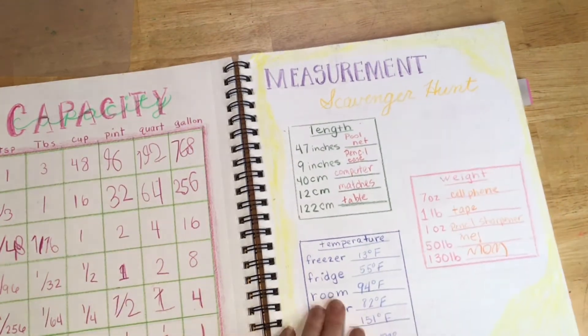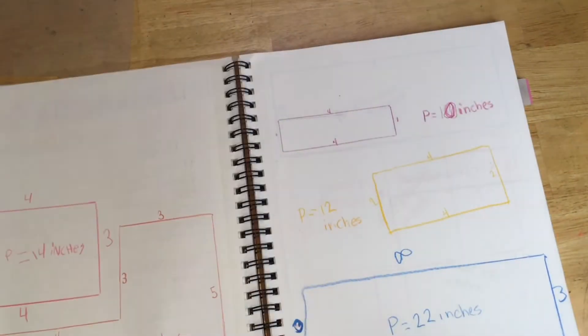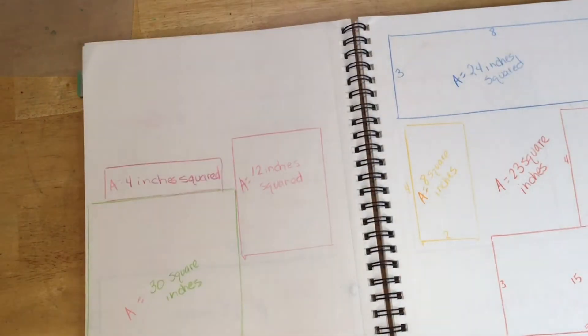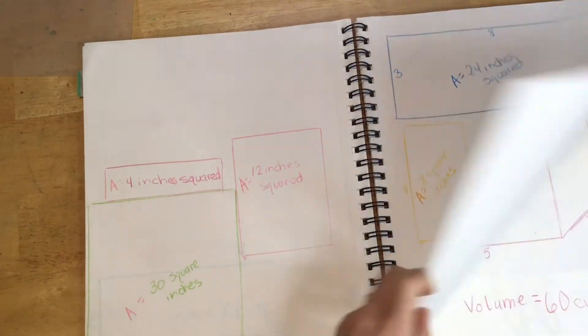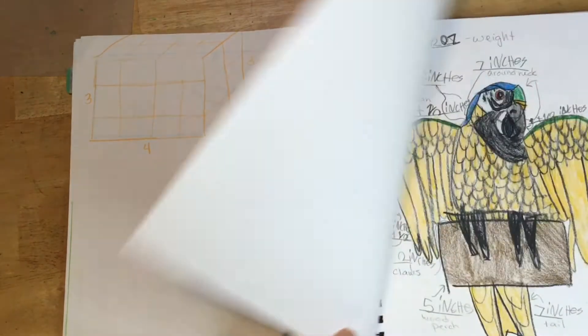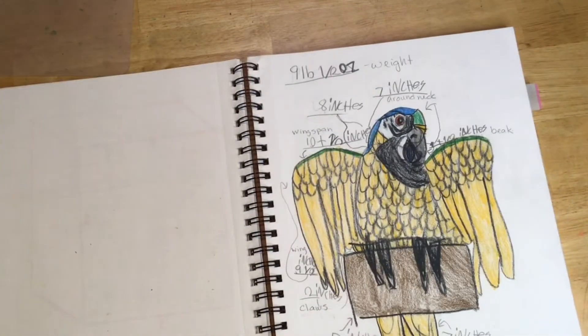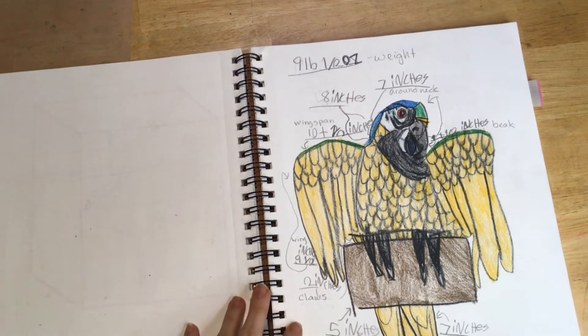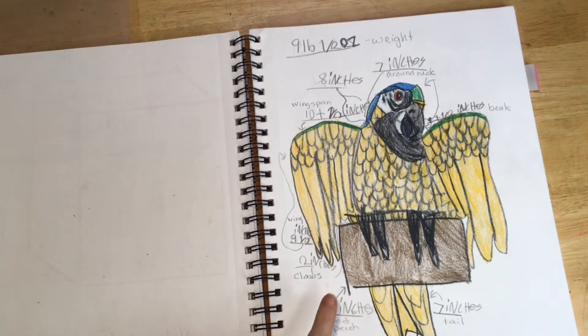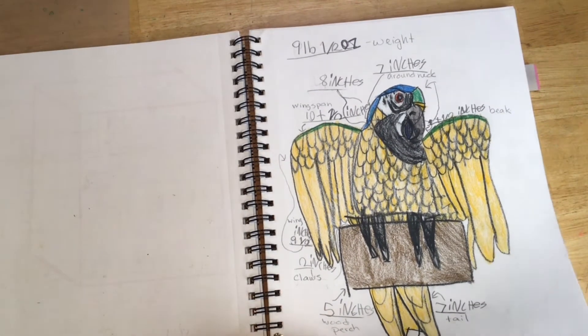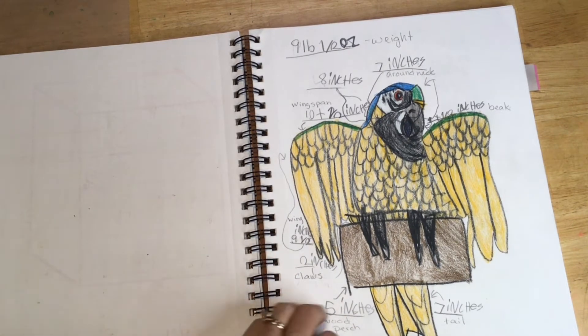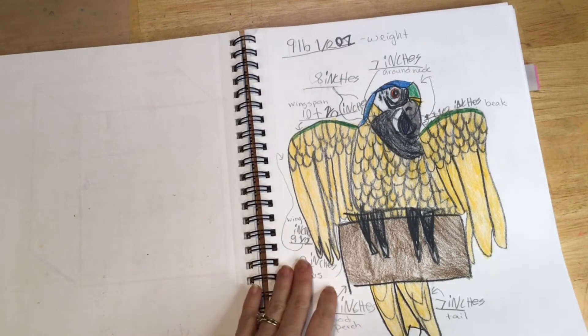And this was a scavenger hunt for measurement, which she loved. And then this is her work on area. And then volume. And then as the culmination for her capacity unit, she did as many measurements as she could possibly do on a given object. And she chose her little wooden macaw to do that with. So she measured all kinds of different measurements. She weighed the bird and various other things.